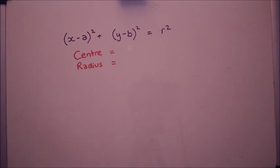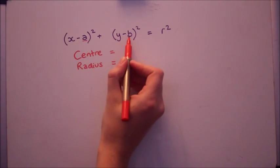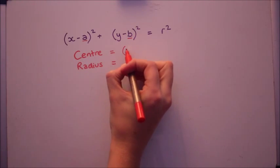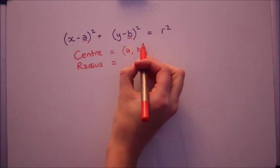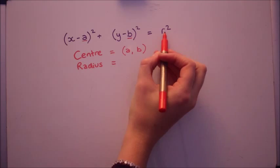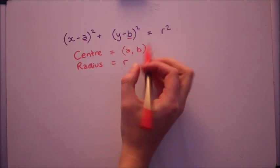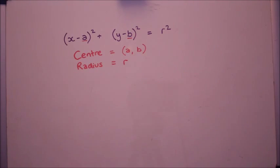You might have seen this already, but this here in purple, that's the basic equation for a circle. The a and the b will give you the center of the circle, whatever those numbers are. And that there is the radius, so r is the radius and in the equation it's actually squared.